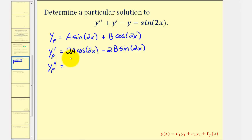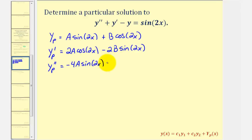For the second derivative, we're going to have 2A times negative sine 2x times two, or negative 4A sine 2x, and then minus 2B times the derivative of sine 2x, which would be cosine 2x times two, giving us minus 4B cosine 2x.